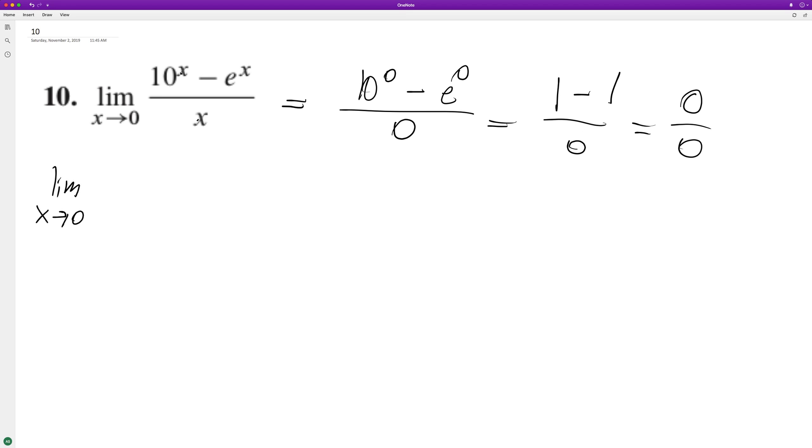So let's go ahead and do that. The derivative of the top is 10 raised to the x natural log 10 minus e to the x. That's an interesting thing about e raised to the x. The derivative is itself over one.